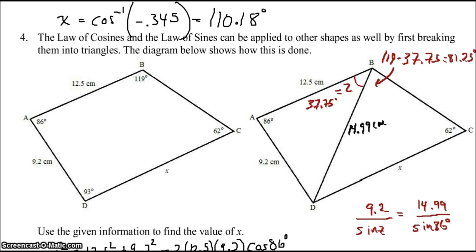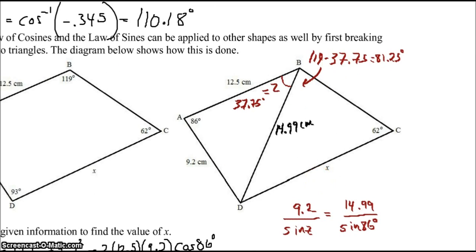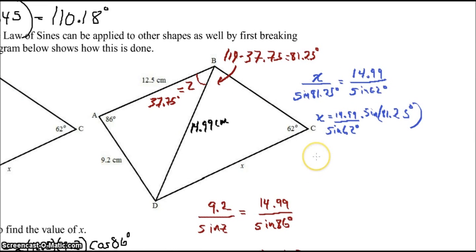Now, it looks like we have all that we need to go ahead and find X. Notice X over the sine of 81.25 degrees should equal 14.99 over the sine of 62 degrees. That means X is 14.99 over the sine of 62 times the sine of 81.25. And thus, X is 16.8 centimeters.